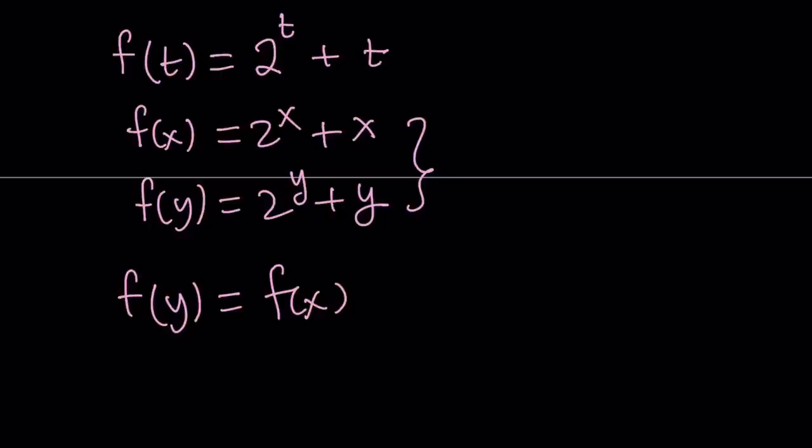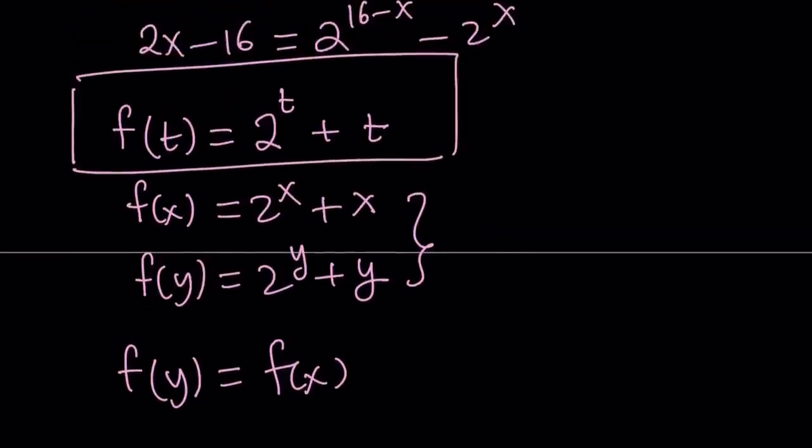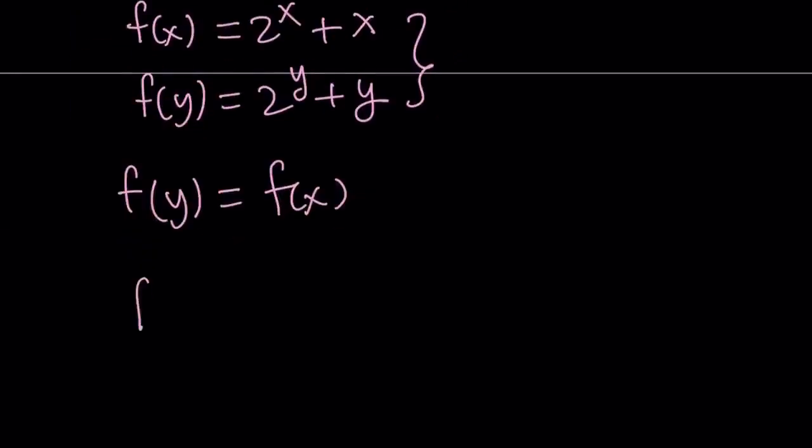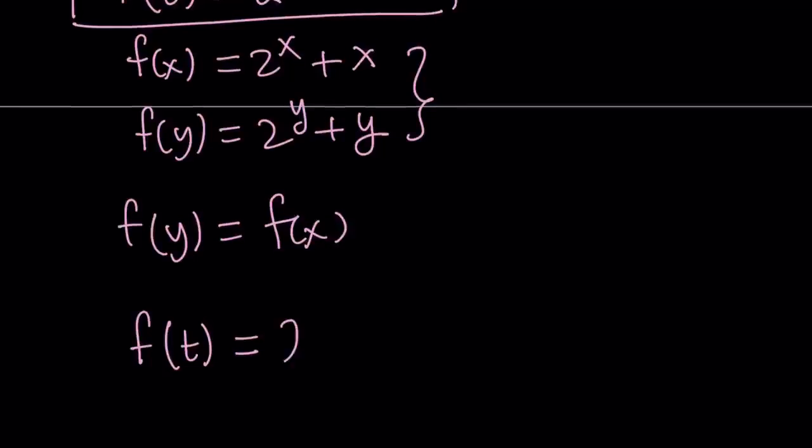So, here's what we're going to do. Since we have this function f of t, it was defined as a function of t. Let's go ahead and differentiate it, right? So, what happens if I differentiate f of t with respect to t? I get 2 to the power t ln 2 plus 1.